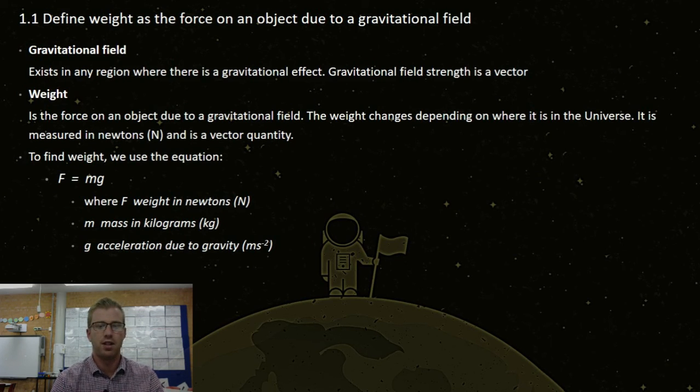To find the weight, we use the equation F equals mg, where F is weight in newtons, m is mass in kilograms, and g is acceleration due to gravity, which is given in the data sheet.